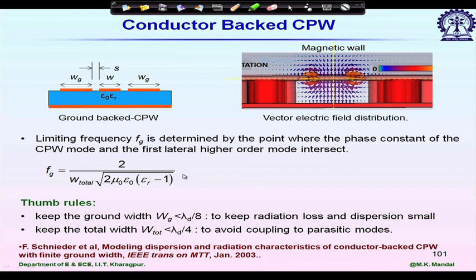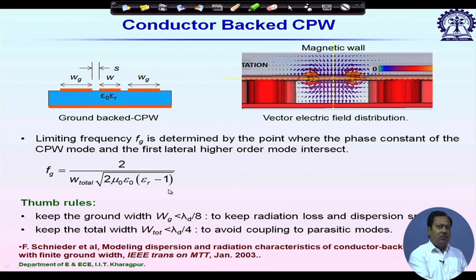The limiting frequency f_g is approximately given as f_g = 2 / (w_total × sqrt(2 × mu_0 × epsilon_0 × (epsilon_r - 1))). It depends on the total width w_total, which spans from leftmost to rightmost point — that is 2×w_g + w + 2×s — and it also depends on epsilon_r.